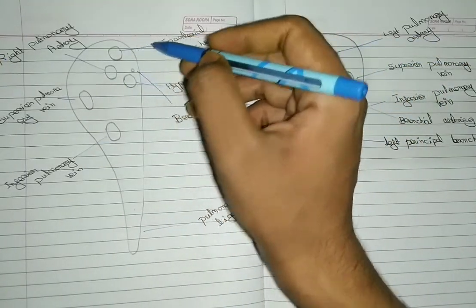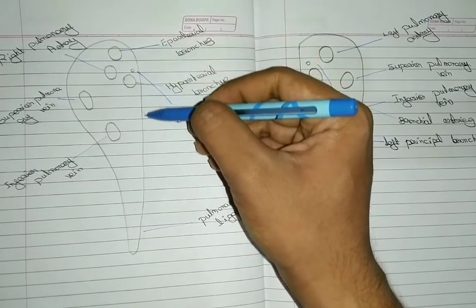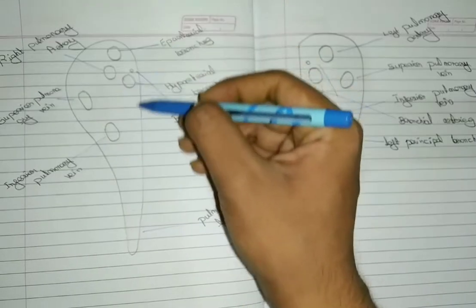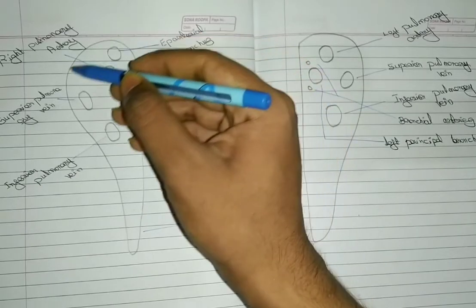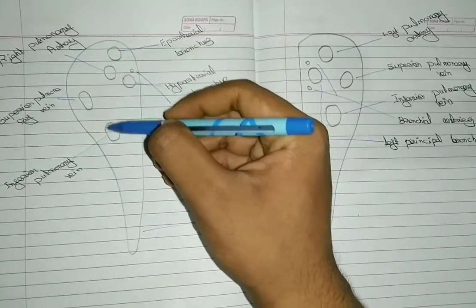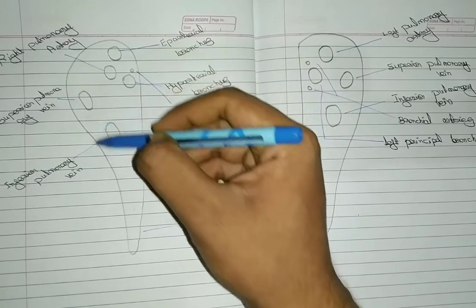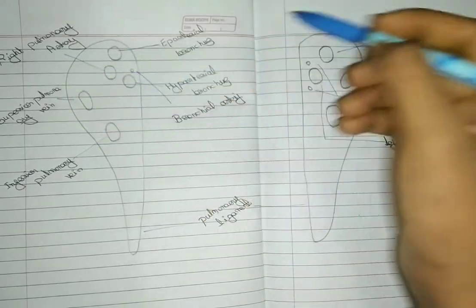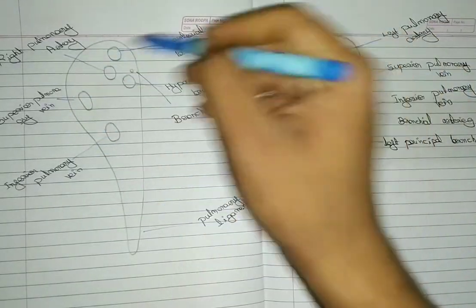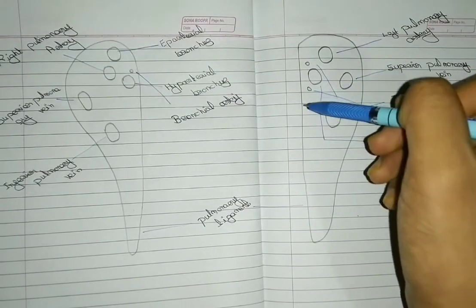The root of lung is surrounded by a tubular sheet, which is formed by the pleura. This is the tubular sheet. This is the Root of the Right Lung, and this is the Root of the Left Lung.